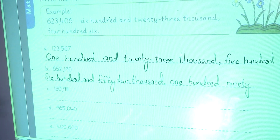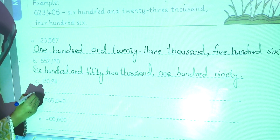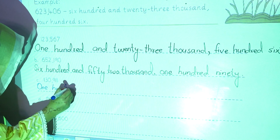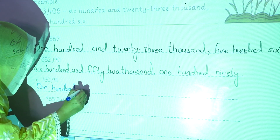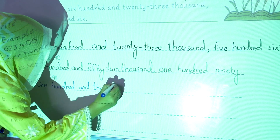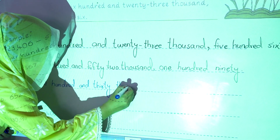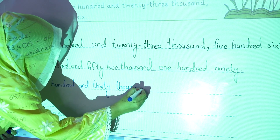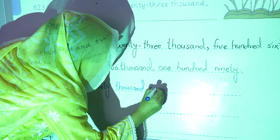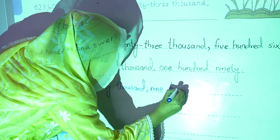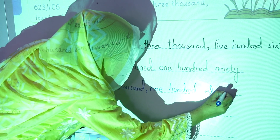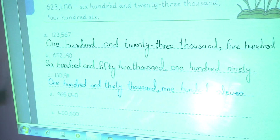The third one is one hundred thirty thousand. And in this way you will complete this activity.